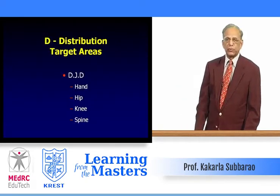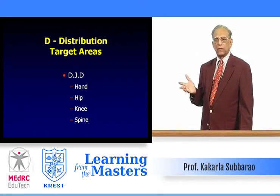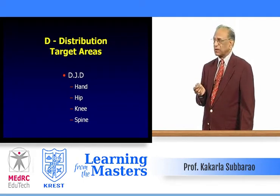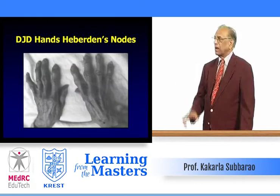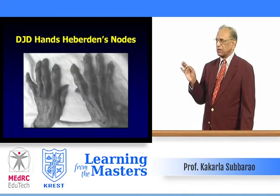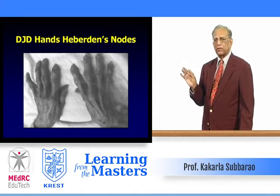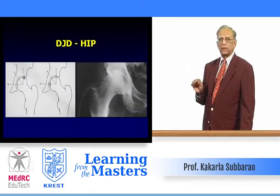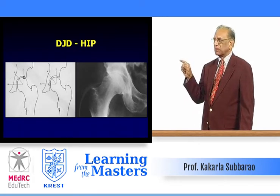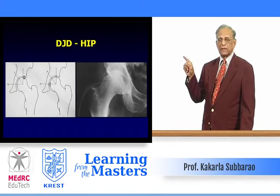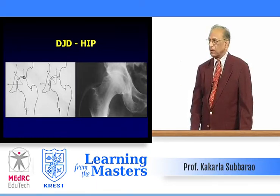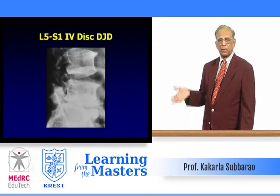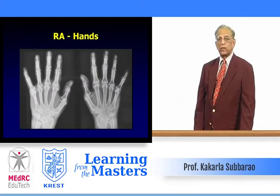Now the D — distribution. For DJD, the target areas are: hands in primary osteoarthritis, weight-bearing hip, knee, and spine. Clinically, osteoarthritis of the hands can be diagnosed by Heberden's nodes — soft tissue swellings overlying the distal interphalangeal joints, occasionally the proximal interphalangeal joints. In degenerative joint disease of the hip, the outer and superior margin is the target — the weight-bearing area. In the spine, the lumbar spine, particularly L5, is commonly involved.